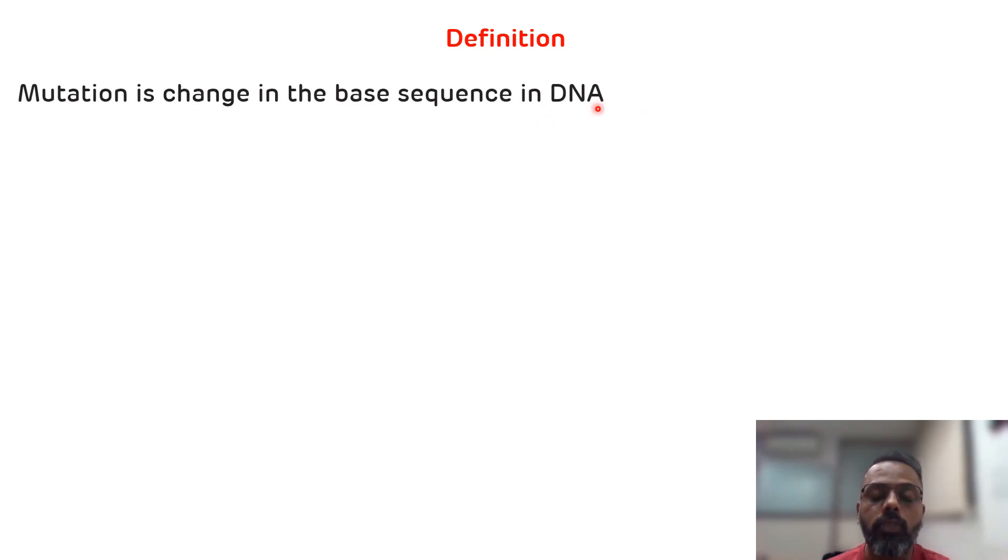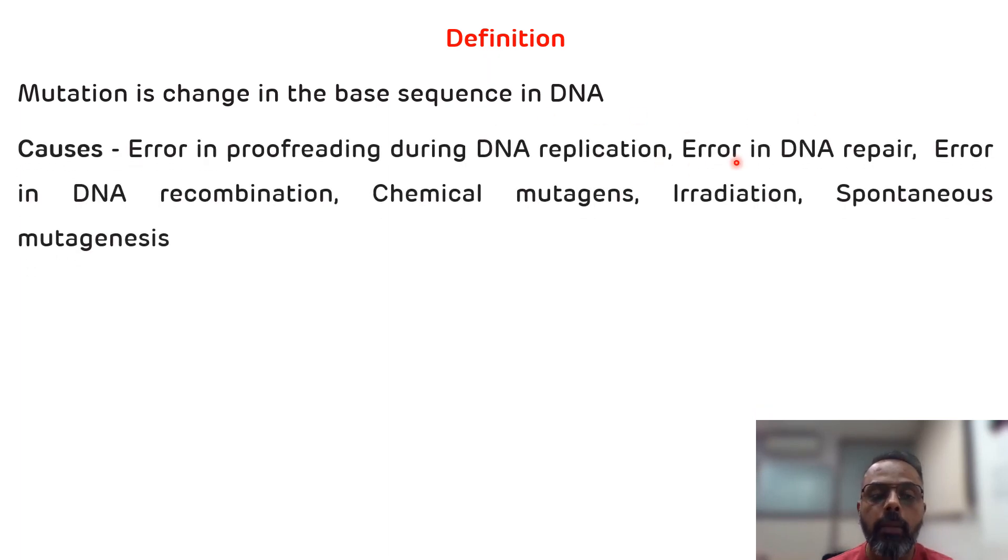Now what are the causes by which mutation can occur? There are various means by which this mutation can occur. First is if there is an error in the replication proofreading mechanism. Second is if there is an error in the DNA repair mechanism.